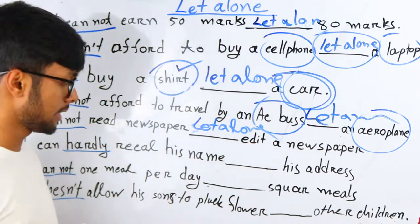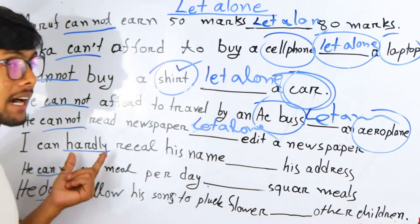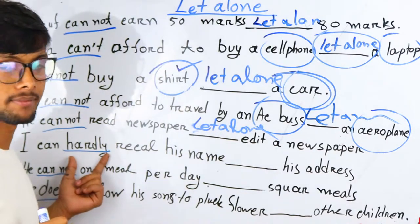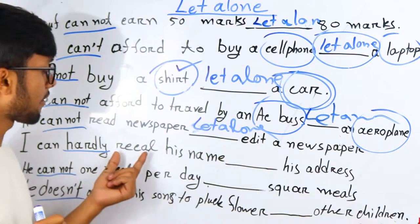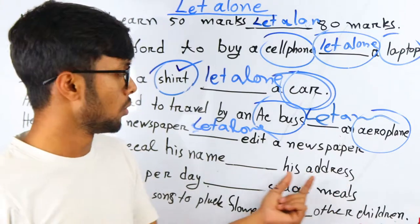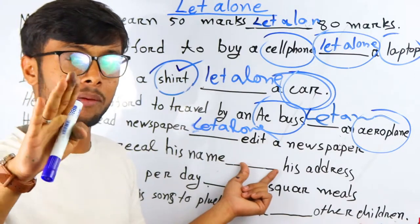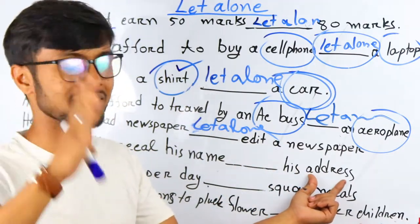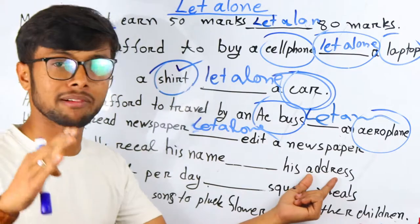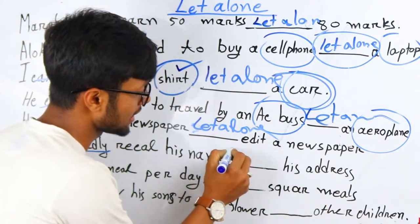Now, 'hardly' also expresses a negative statement. So: 'I can hardly recall his name, let alone his address.' You cannot remember a person's name — so how is it possible to remember their address? That is so much harder. At this moment you use 'let alone.'